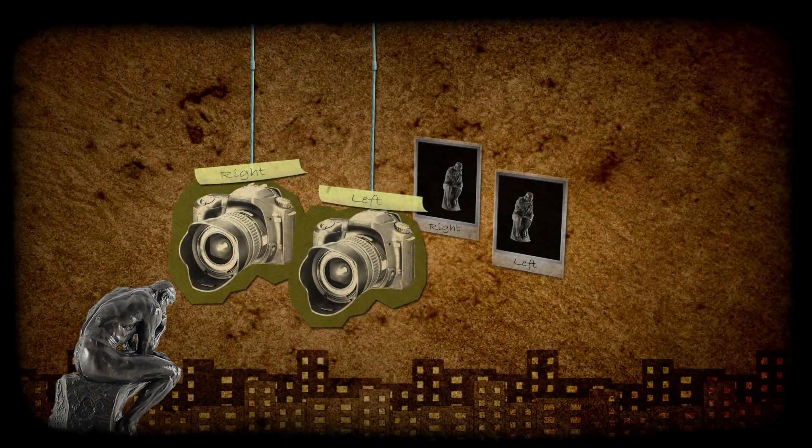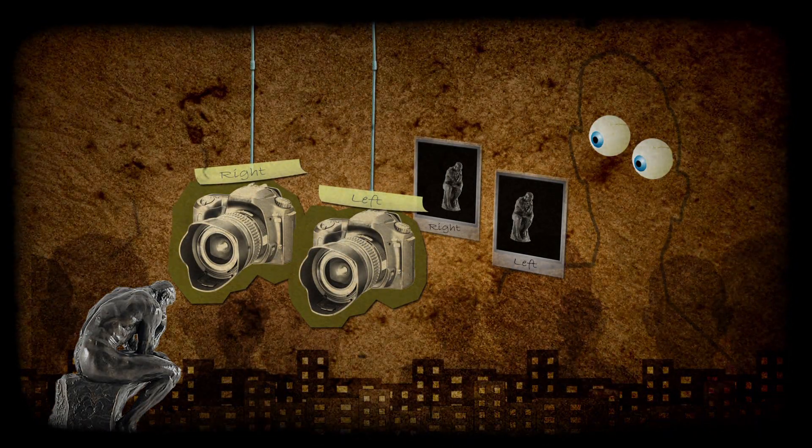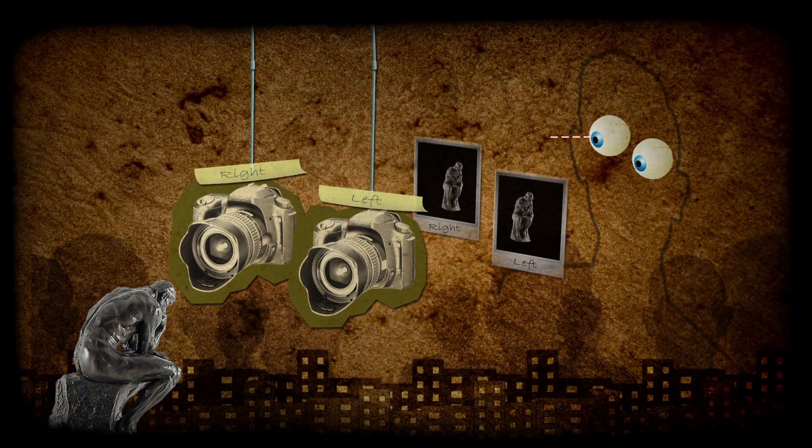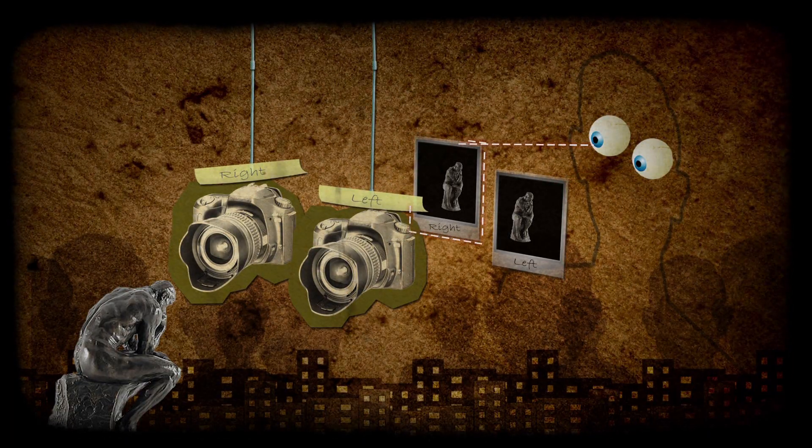The second step is to display these images. That's when we must ensure that each eye sees only its image. There are several techniques to accomplish that, and we'll explain some of them.